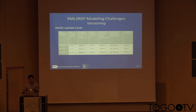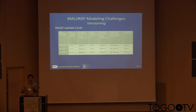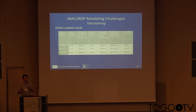Another challenge is versioning. MeSH is updated on a yearly basis. We decided to provide the current MeSH and different yearly versions in separate graphs. We also provide both a current URI and year-specific URIs. MeSH XML does not provide tracking of changes — if a term or concept is deprecated and replaced by a new one, the XML doesn't reflect that redirect. What we can do is mark a concept as deprecated, so instead of a 404 error, you get a response indicating the concept is deprecated.